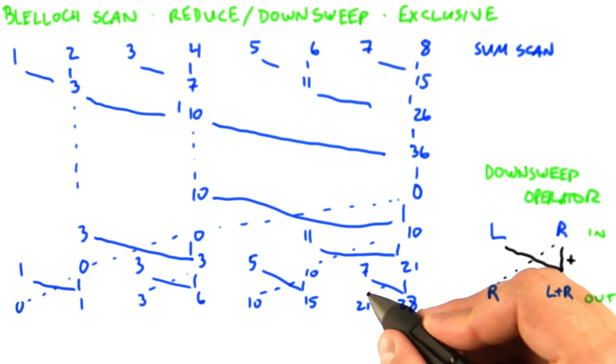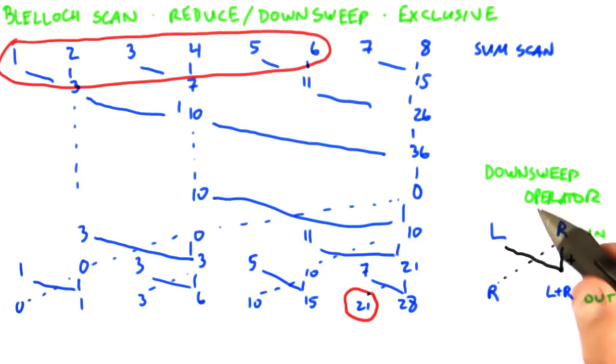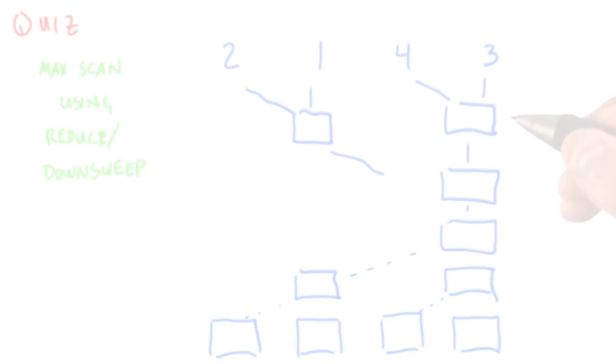What we see for instance is that at every output, such as this 21 here, 21 is the sum of all the elements that came before. So 21 is the sum of 1 to 6 and so on.